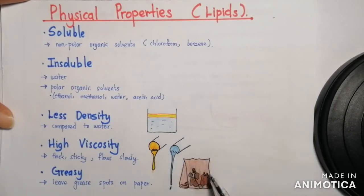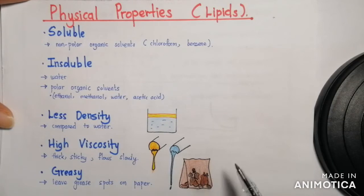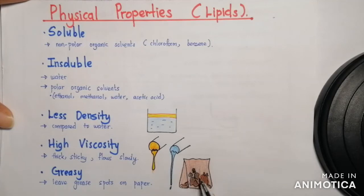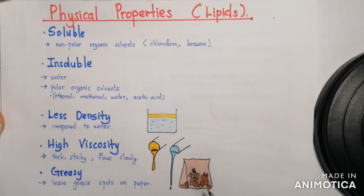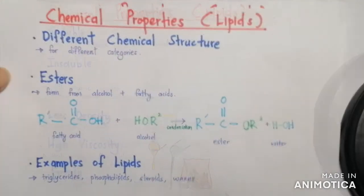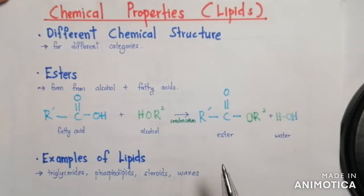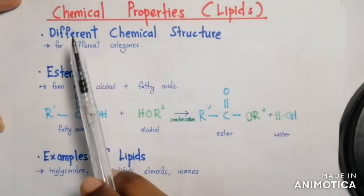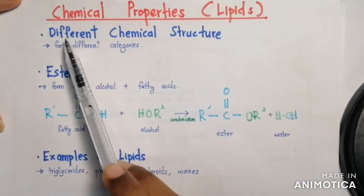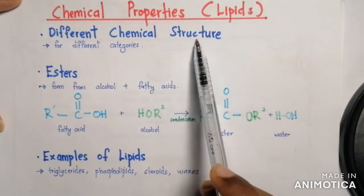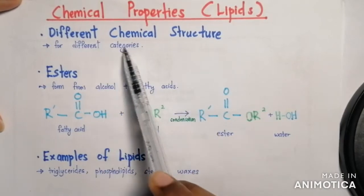For example, if you buy fried food in a paper bag, after a moment you can see there are grease spots on the paper. This is also a physical property of lipids. The chemical properties of lipids differ — they have different chemical structures for different categories.